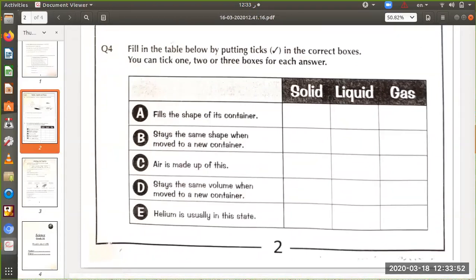The table: fill in the table below by putting ticks in the correct boxes. You can tick one, two, or three boxes for each answer. Number A: fills the shape of its container, so gas. Stays the same shape when moved to a new container, the same shape, so it's only the solid.